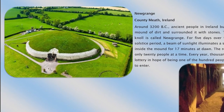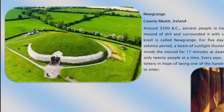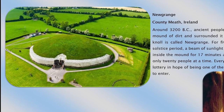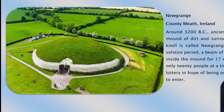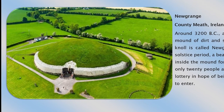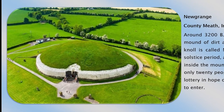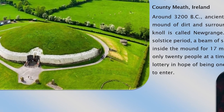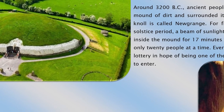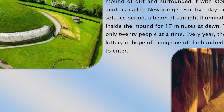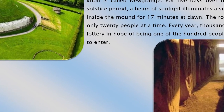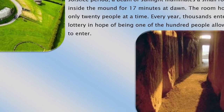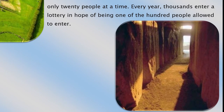Newgrange in County Meath, Ireland was built around 3200 BC — ancient people built a huge mound of dirt and surrounded it with stones. Today the knoll is called Newgrange. For five days over the winter solstice period, a beam of sunlight illuminates a small room inside the mound for 17 minutes at dawn. The room holds only 20 people at a time, and every year thousands enter a lottery hoping to be one of the hundred people allowed to enter.